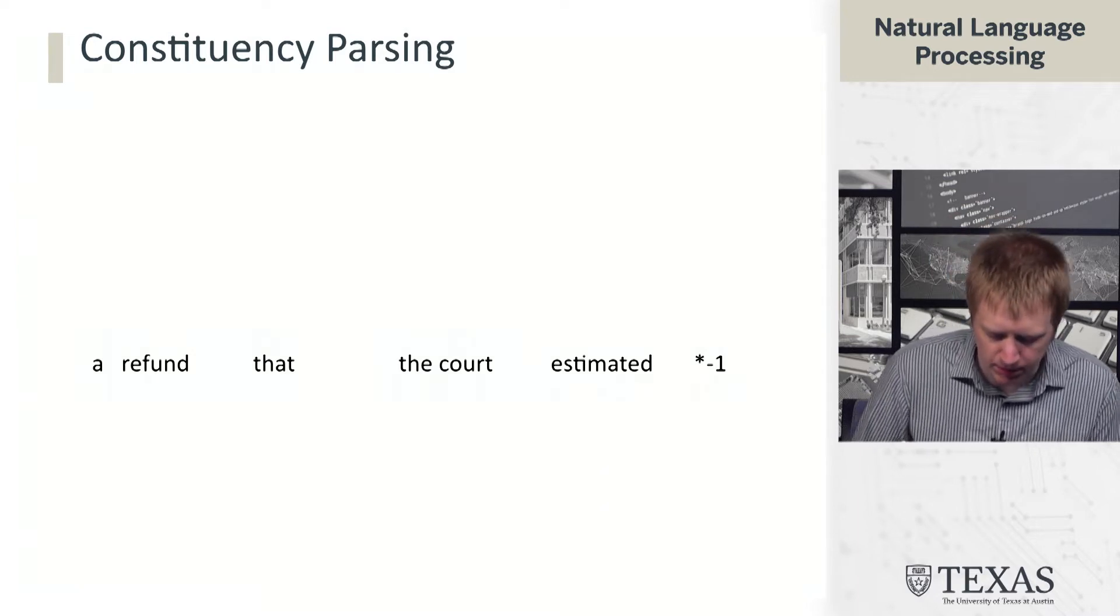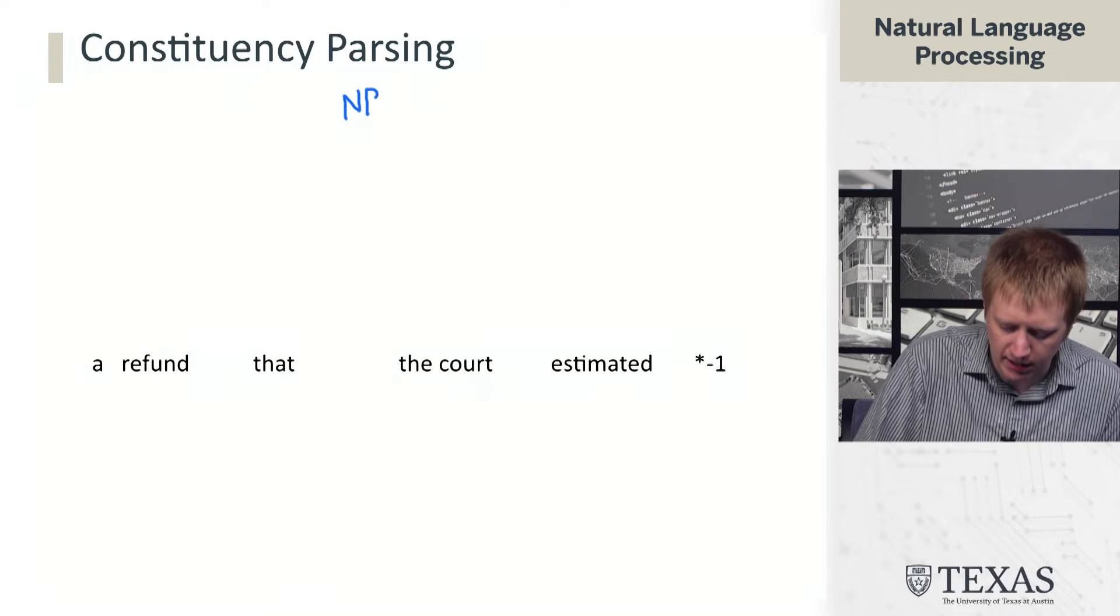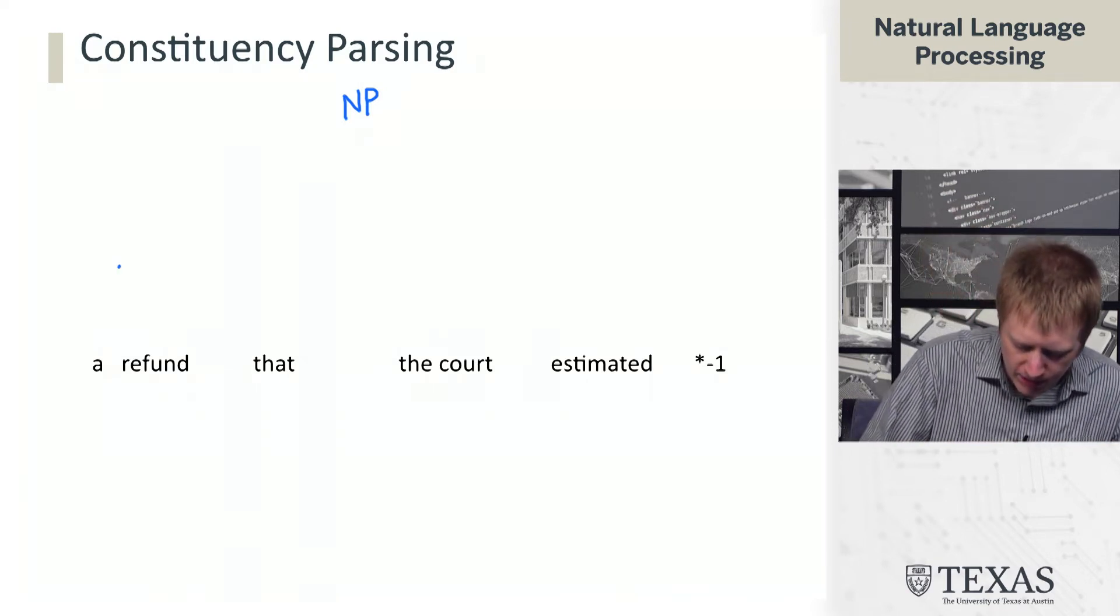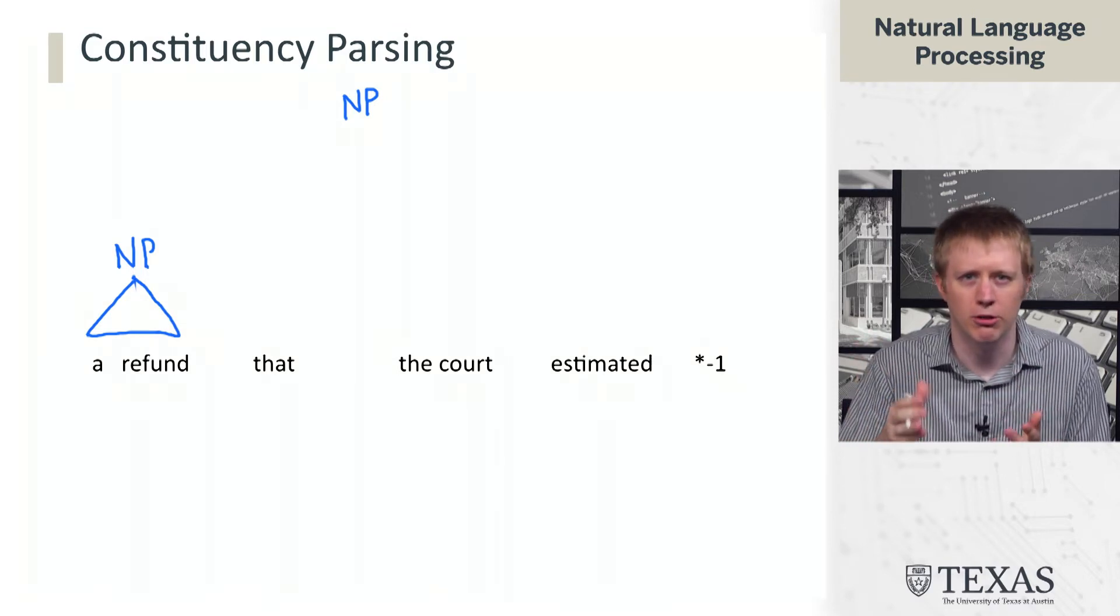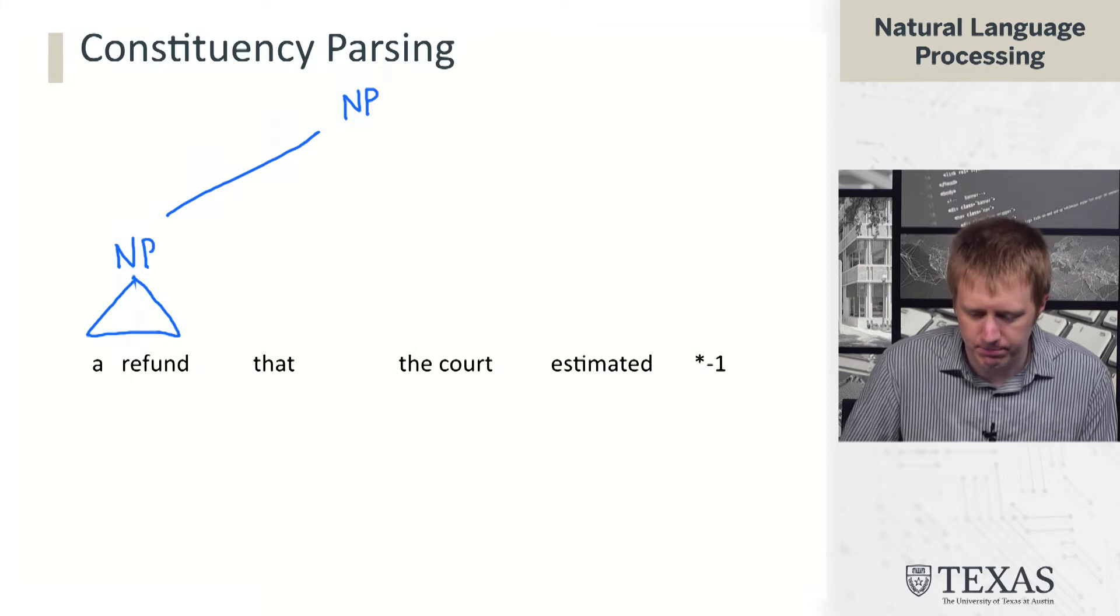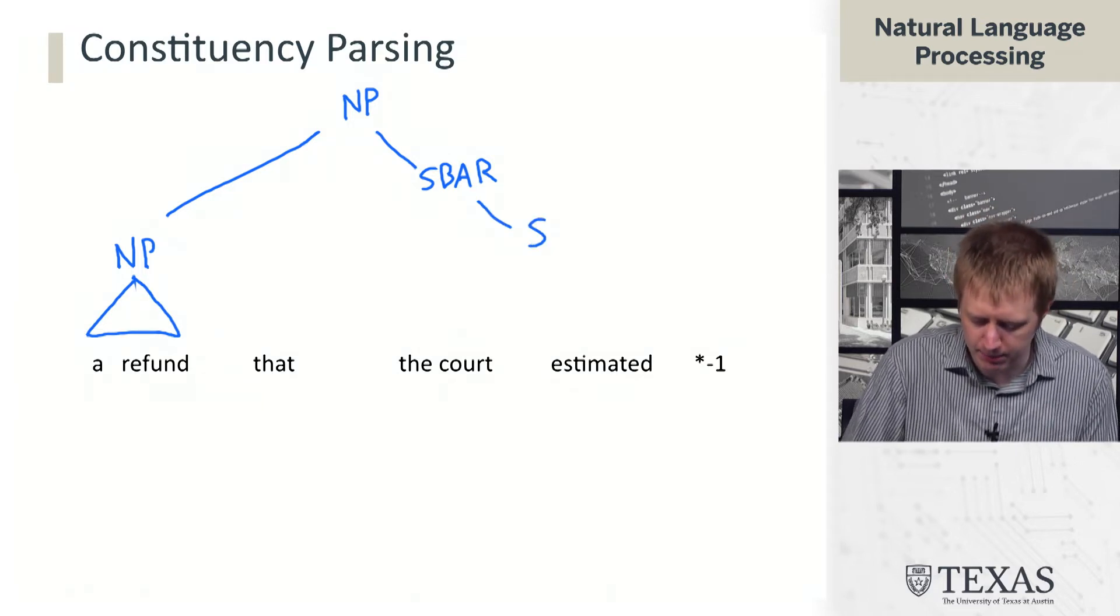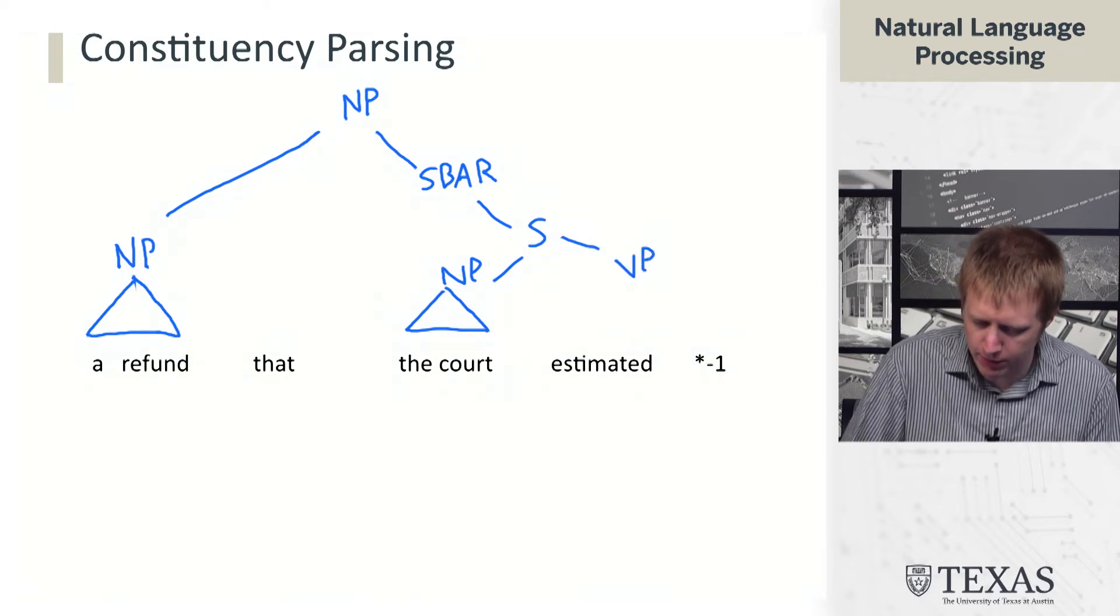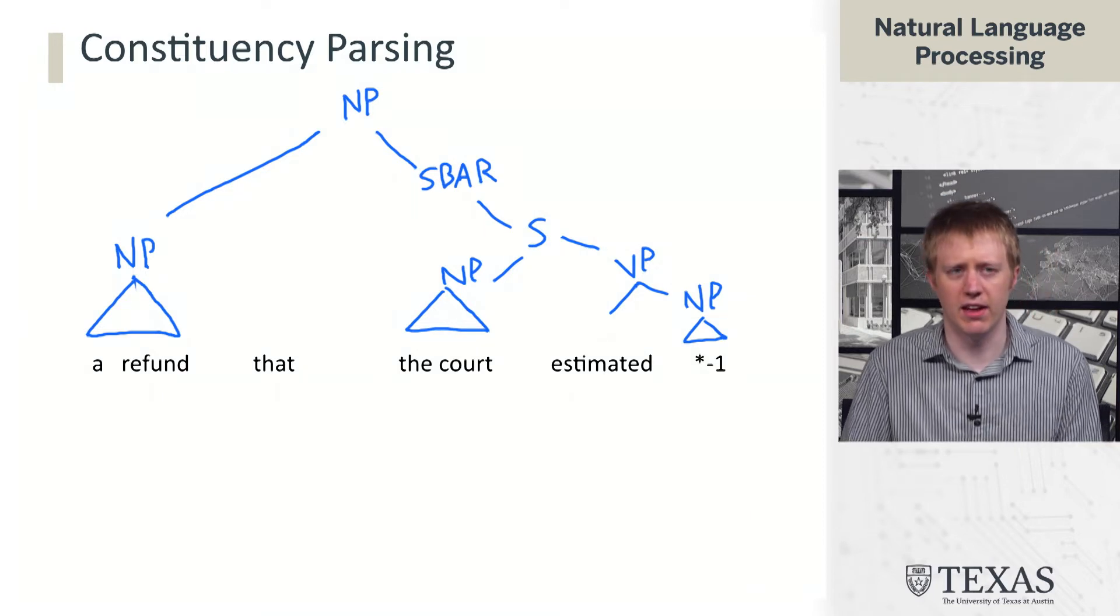Let's take a look at one more example just to understand a little bit of the level of complexity here. So this whole phrase here is going to end up being a noun phrase: a refund that the court estimated. Fundamentally we're talking about a refund here. Within that we have a smaller noun phrase, a refund, and I'm just going to draw this triangle to indicate that there's some other structure here that I'm not going to write out like the part of speech tags and stuff like that. We're just going to use that to kind of ignore what's going on there.